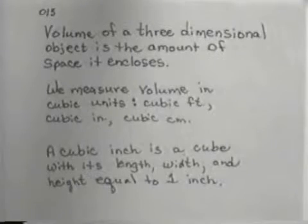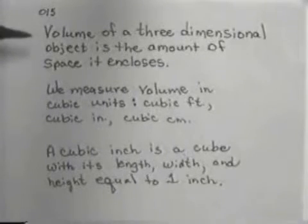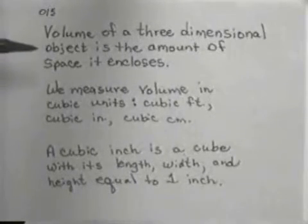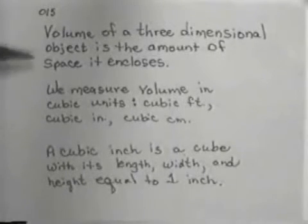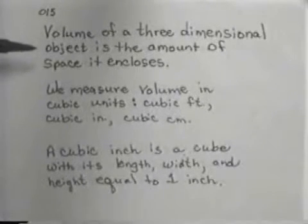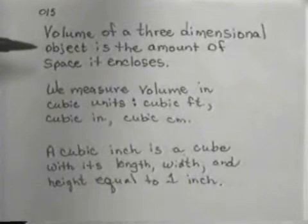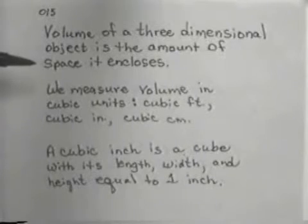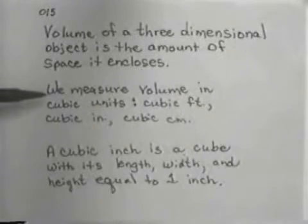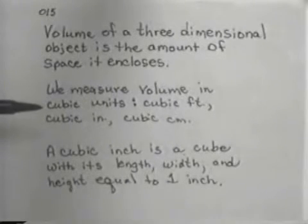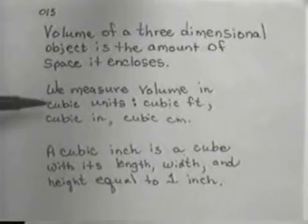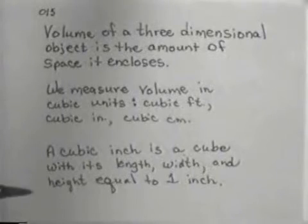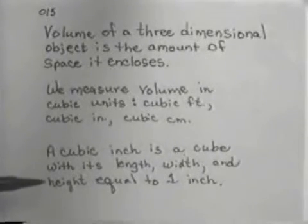The next thing we want to talk about is volume. And we mentioned in an earlier lesson that the volume of a three-dimensional object is the amount of space it encloses. In other words, when you're in three dimensions, you're moving into some type, probably some type solid object that encloses some space. So the volume is the amount of space the three-dimensional object encloses. We measure volume in cubic units. For example, cubic feet, cubic inches, cubic centimeters, just for several types of cubic units.